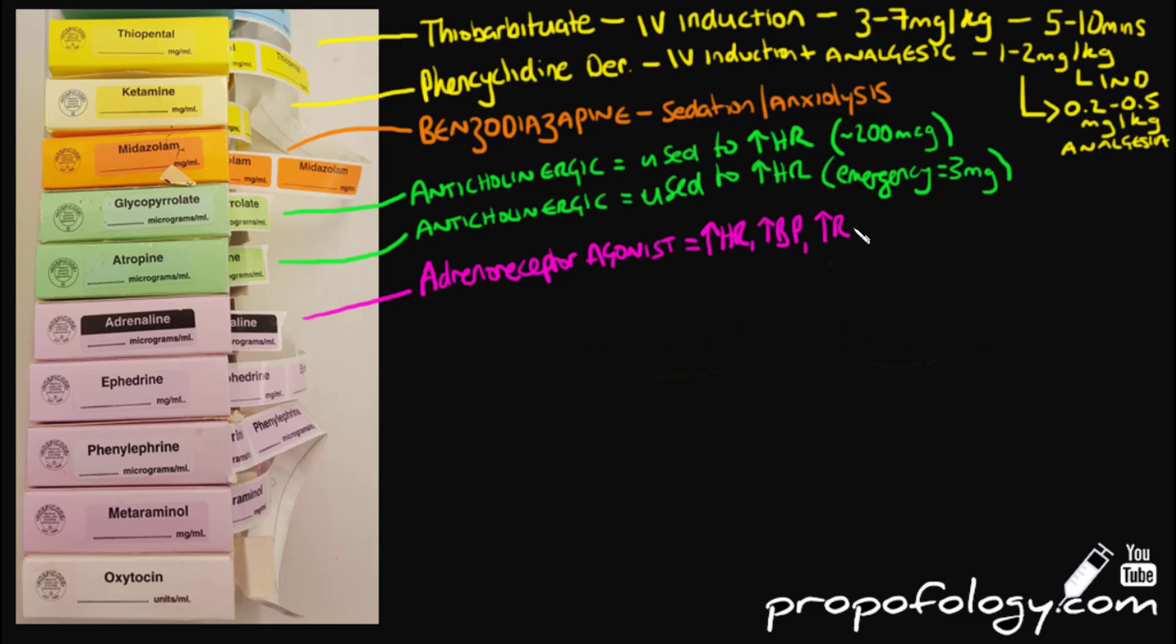Adrenaline when used at low doses will have more beta effects than alpha effects. It will increase your cardiac output, increase your cardiac oxygen consumption. It's a coronary artery vasodilator. It will drop your diastolic blood pressure and decrease your peripheral vascular resistance. At higher doses, we see the alpha effects predominate and that increases your systemic vascular resistance, thus increasing preload to the heart and increasing your blood pressure even more.